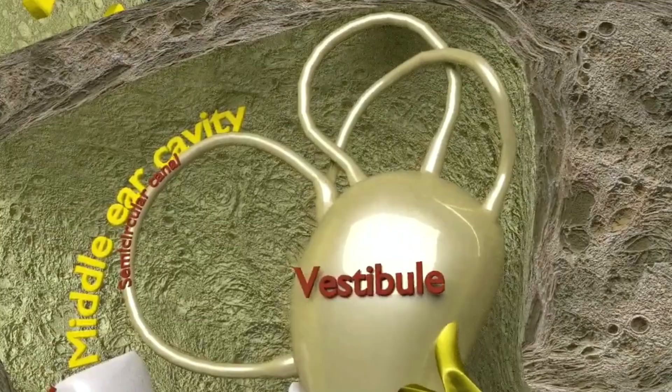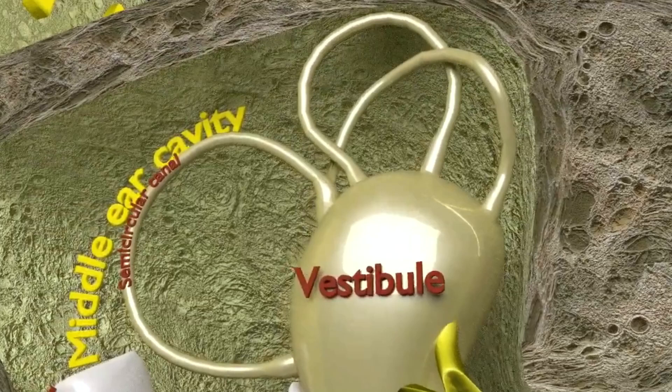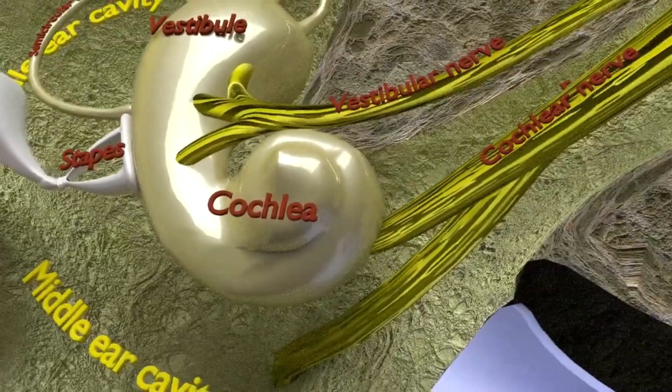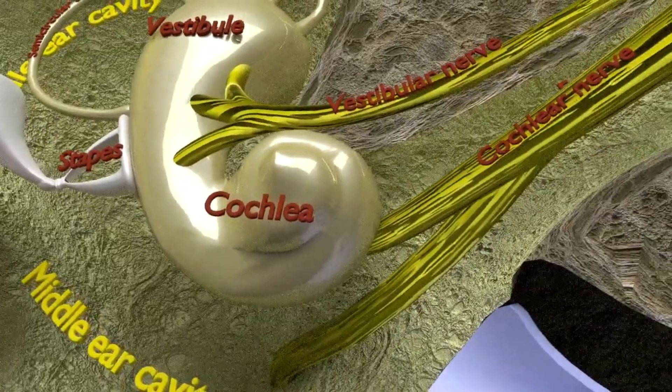The three semicircular canals are responsible for dynamic balance. The utricle and the saccule enable balance when stationary. The cochlea is responsible for the sense of hearing. These structures together create the membranous labyrinth.